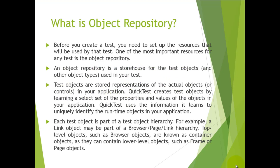Before you create a test you need to set up the resources that will be used by your test script. Object repository is the core of your QTP script which accomplishes your business flows. Object repository is a storehouse for the test objects used in your script — a collection of all the objects which helps QTP to identify the objects on the screen during recording and replay.